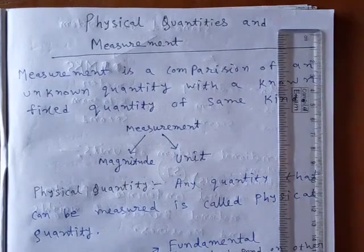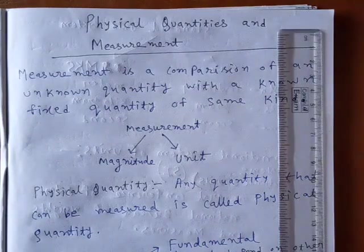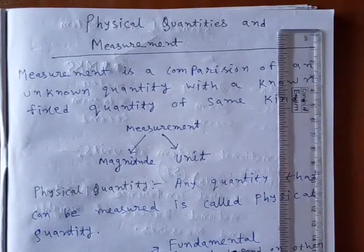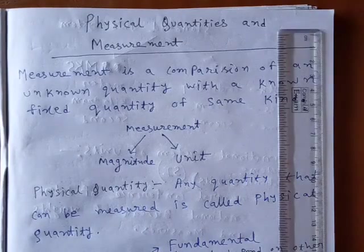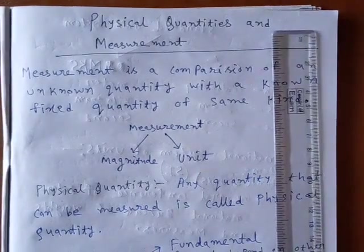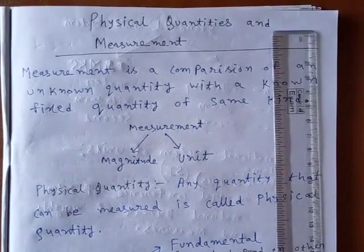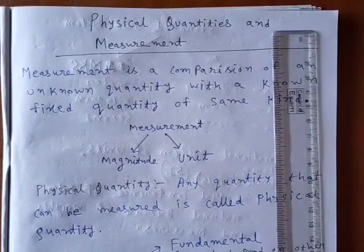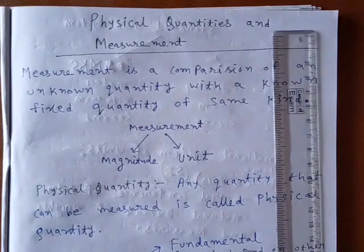First you have to know the distance between that place and your home and then the required time to reach there. And after knowing those information, then only you can plan your journey accordingly. So to plan your journey, you have to first measure the distance between your home and that place. That is basically measurement of length and the time required. That means you have to measure the time.